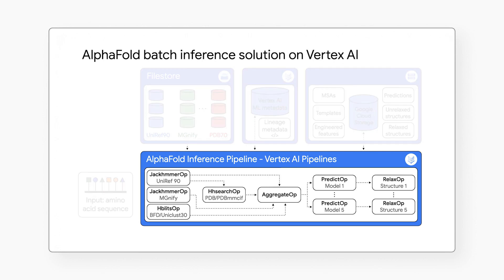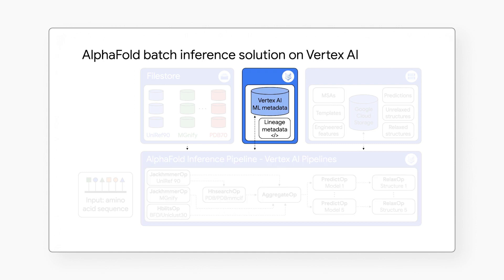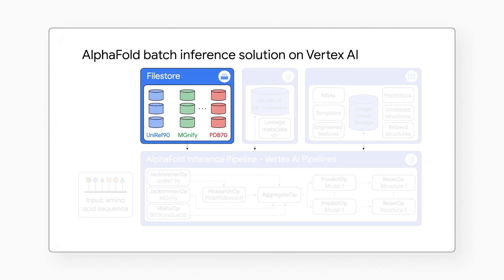The solution uses Vertex pipelines as an orchestrator and runtime, Vertex metadata for metadata and artifacts, and file store to manage databases. Because it's built on Vertex AI pipelines, you can automate, monitor, and experiment with interdependent parts of an ML workflow. The minimized inference elapsed times means what normally would take you days can now take you hours.